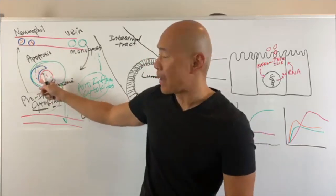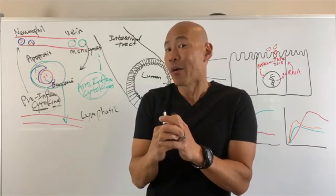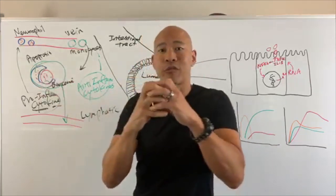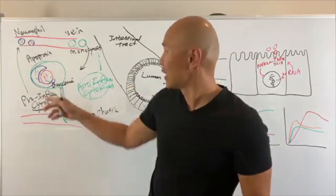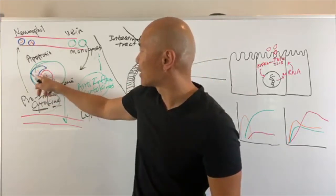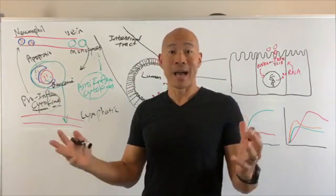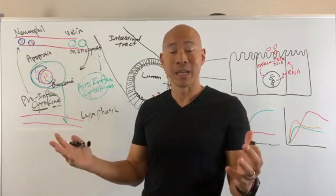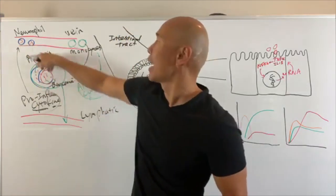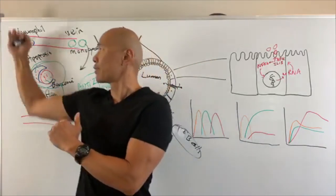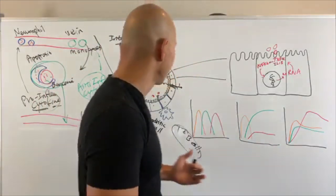Once the neutrophil eats the bad guy, it only has so many hours before it starts to fragment and self-destruct. And when it does, it spills out all these enzymes and debris, and your immune system says, oh my god, I've got cellular debris — I need to send more guys to clean it out. You've built up too much on the pro-inflammatory side and not enough on the anti-inflammatory side, and you become chronically inflamed.